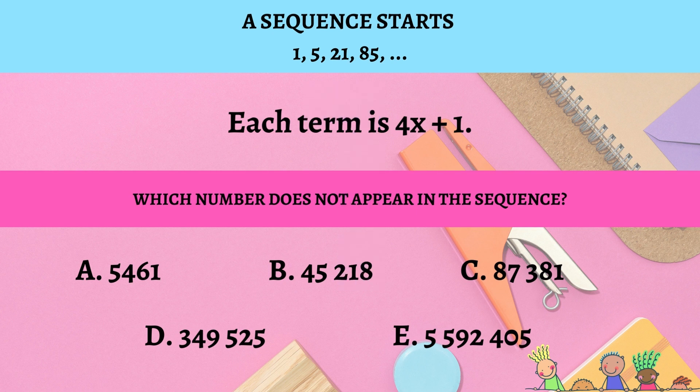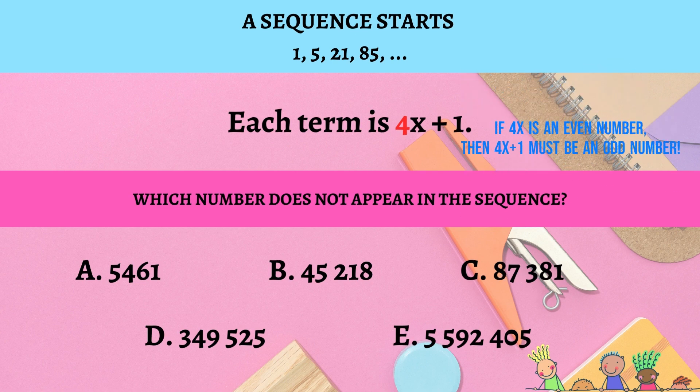There are two approaches you can take. The first one is to look at the formula for each term. We know that 4 is an even number and multiples of an even number are always even. That means that 4x + 1 has to be an odd number. All of the answers are odd numbers except for b, which is even, so b does not belong.